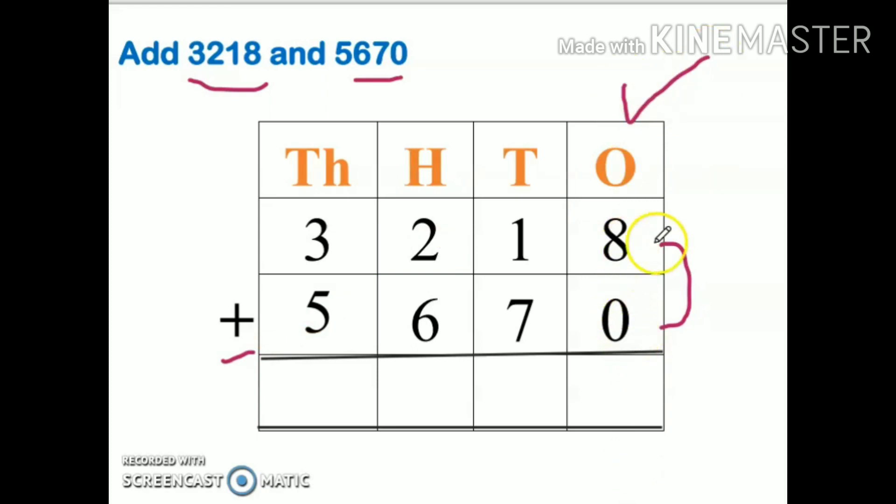Eight plus zero. Whenever we add any number with zero, the answer is the number itself, so my answer is eight. Next, one plus seven. Whenever we add any number with one, my answer is the number which comes after, so my answer is eight.